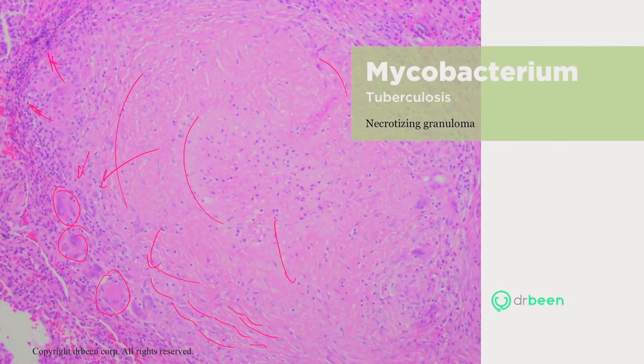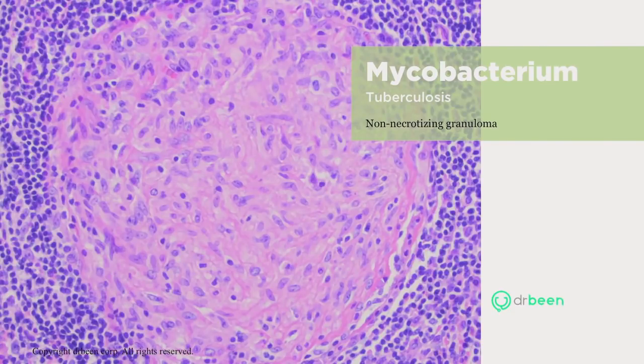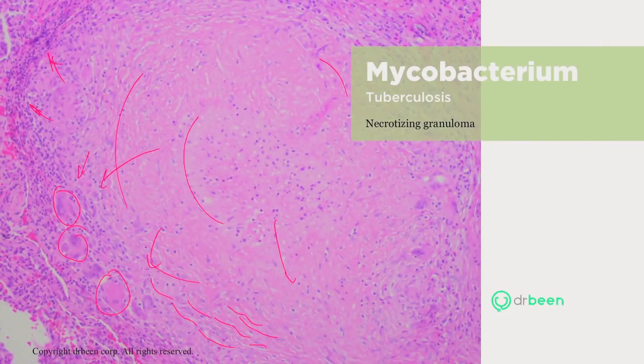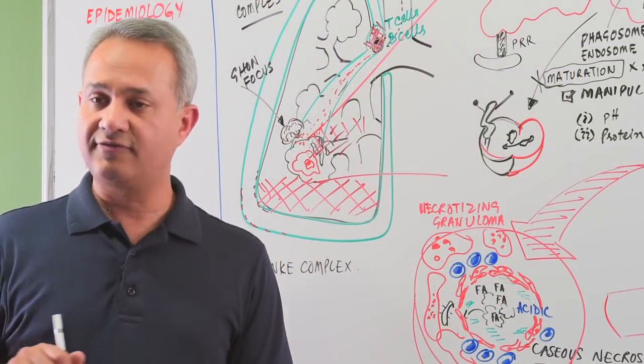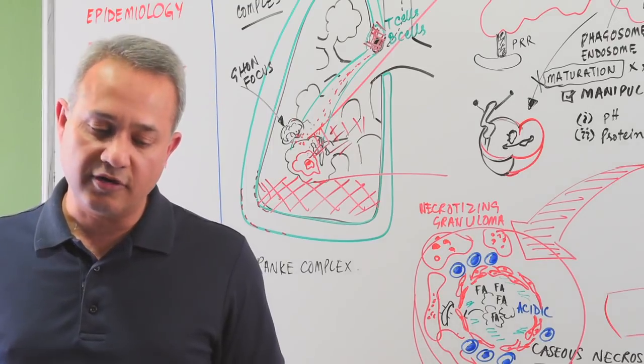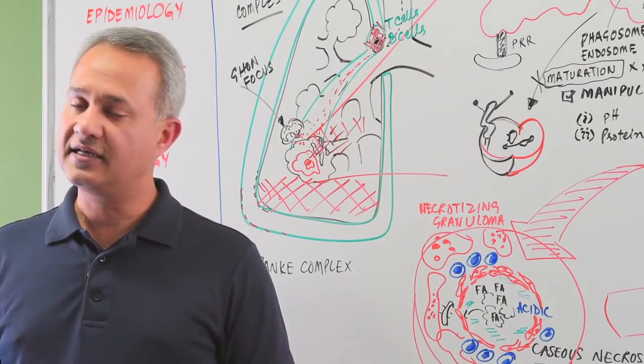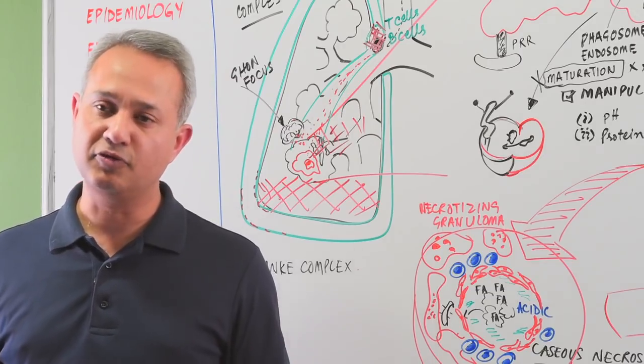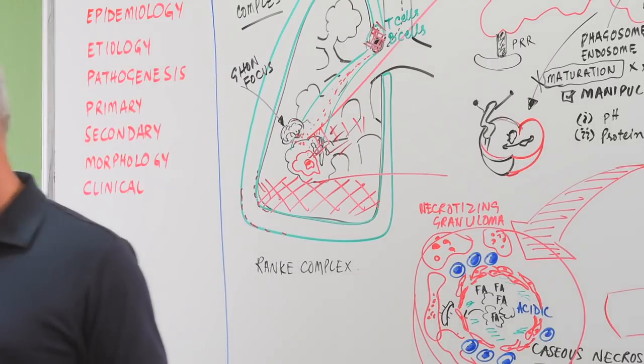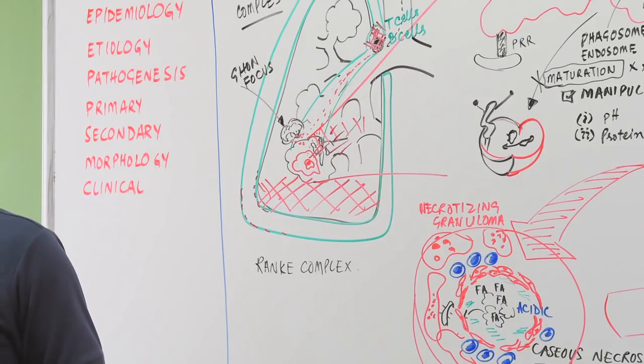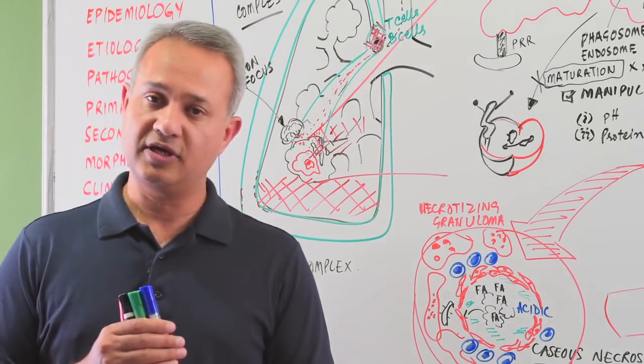Compare this to a non-necrotizing granuloma. Here, this is also a granuloma. You can see the cellularity on the sides. You can see that even inside the granuloma, there are cells present. So, this is a non-necrotizing granuloma. Maybe this is sarcoidosis. This is something else. Now, also remember, necrotizing granuloma is not a diagnosis of tuberculosis. This can happen for many reasons. It can happen because of fungal infections. It can happen because of other infections. It can happen because of immune deficiencies. It can happen because of many other reasons too. Cool. So, that concludes the discussion about the primary tuberculosis.